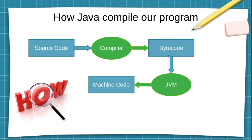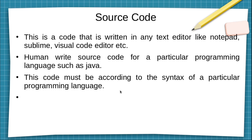This bytecode then goes as input to the JVM — the Java Virtual Machine — which interprets this bytecode and converts it into machine code, which is then executed by a particular machine.